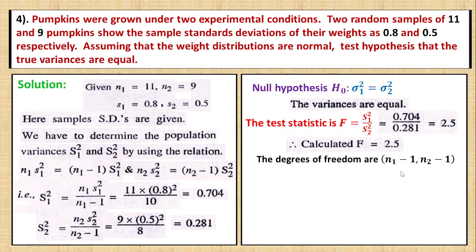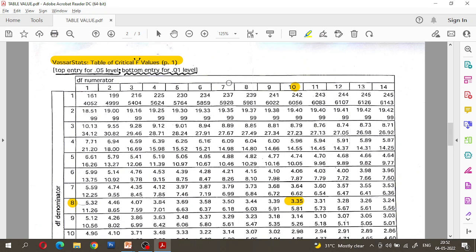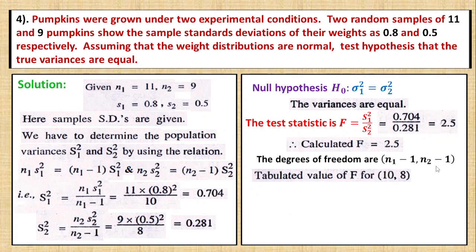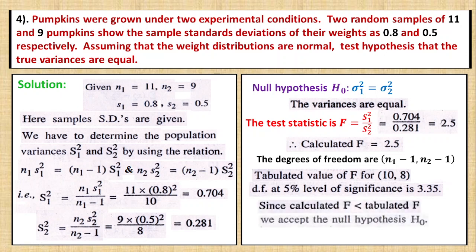The degrees of freedom are (n₁ - 1, n₂ - 1), which is (10, 8). At the 5% level of significance, the tabulated value of F is 3.35. Since the calculated F of 2.5 is less than the tabulated F, we accept the null hypothesis H₀.